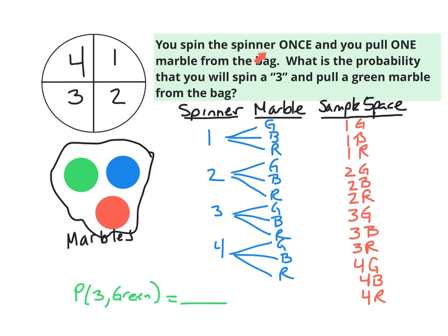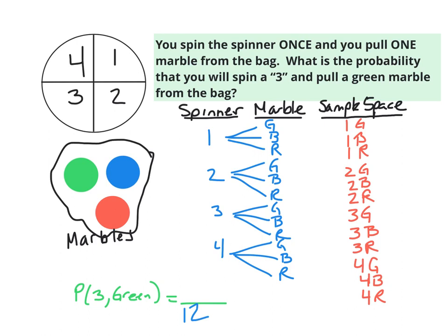New problem: you spin the spinner once and pull one marble from the bag. The spinner has four outcomes, and the bag has three marbles — one green, one blue, one red. Using a tree diagram, each spinner result branches into green, blue, or red. This gives a sample space of twelve total outcomes, so all probabilities will be based on twelve possible outcomes.